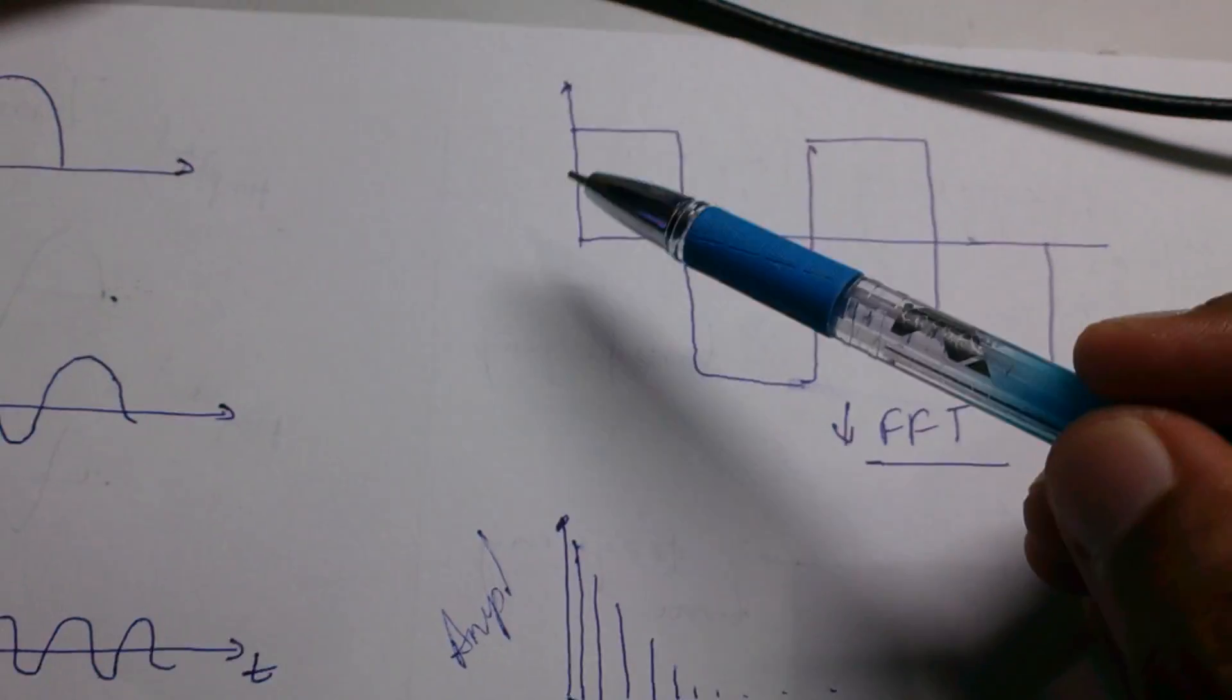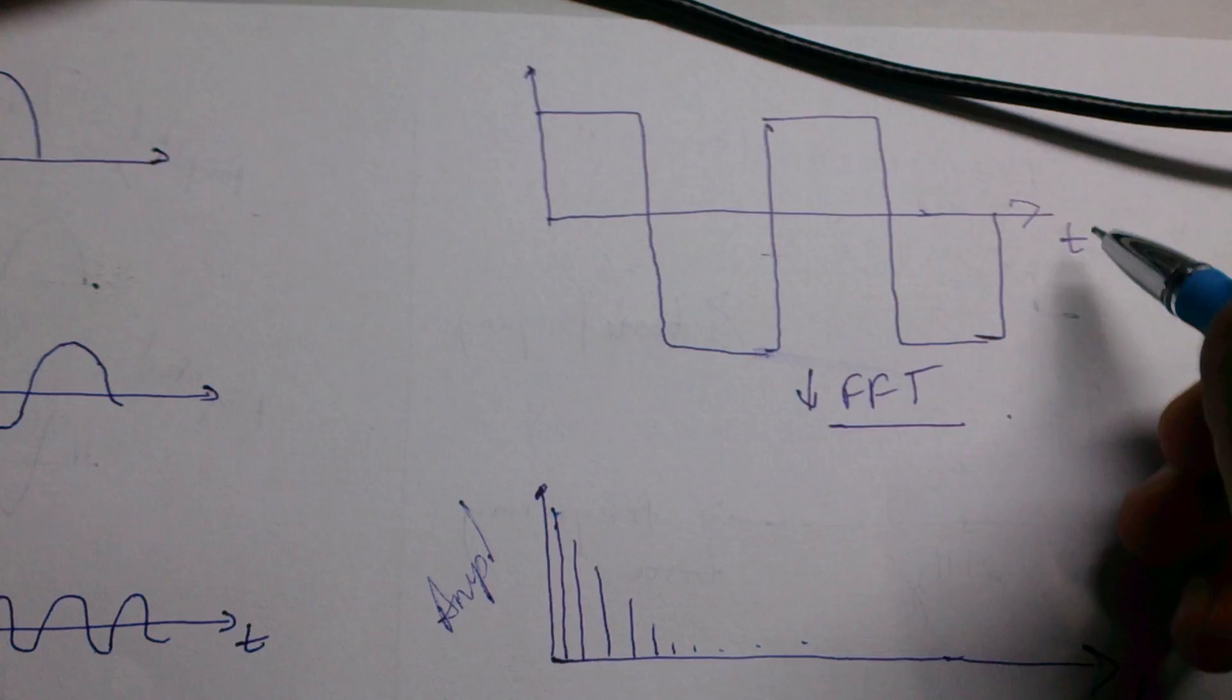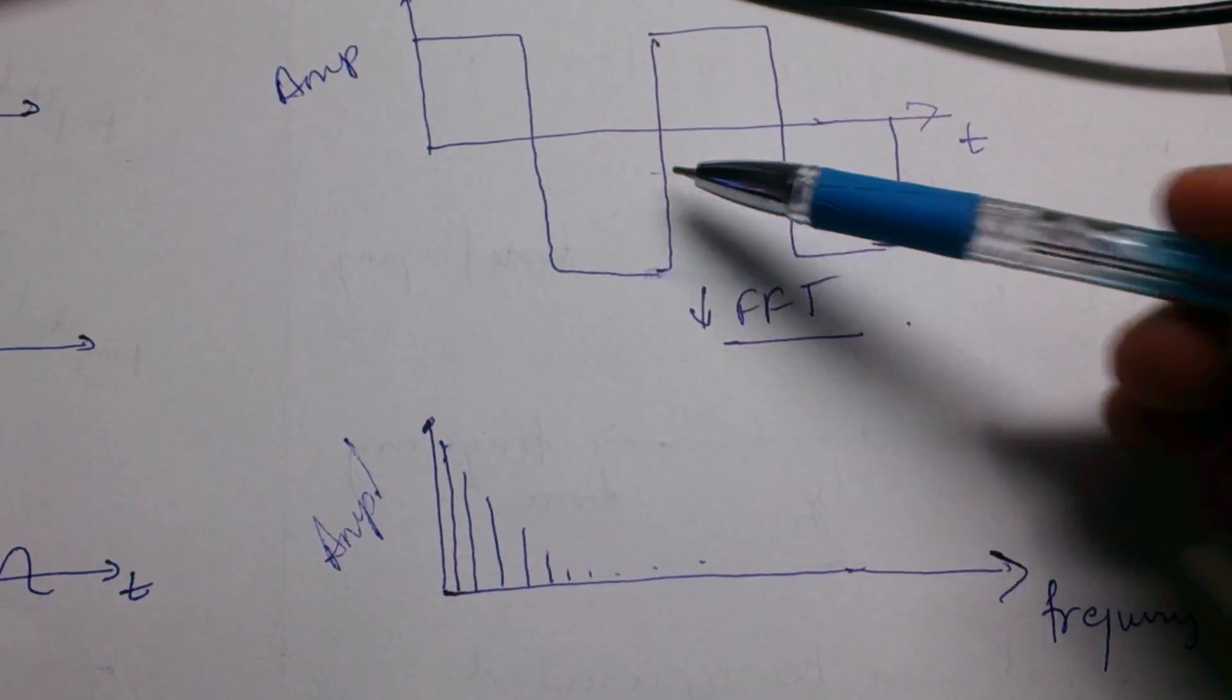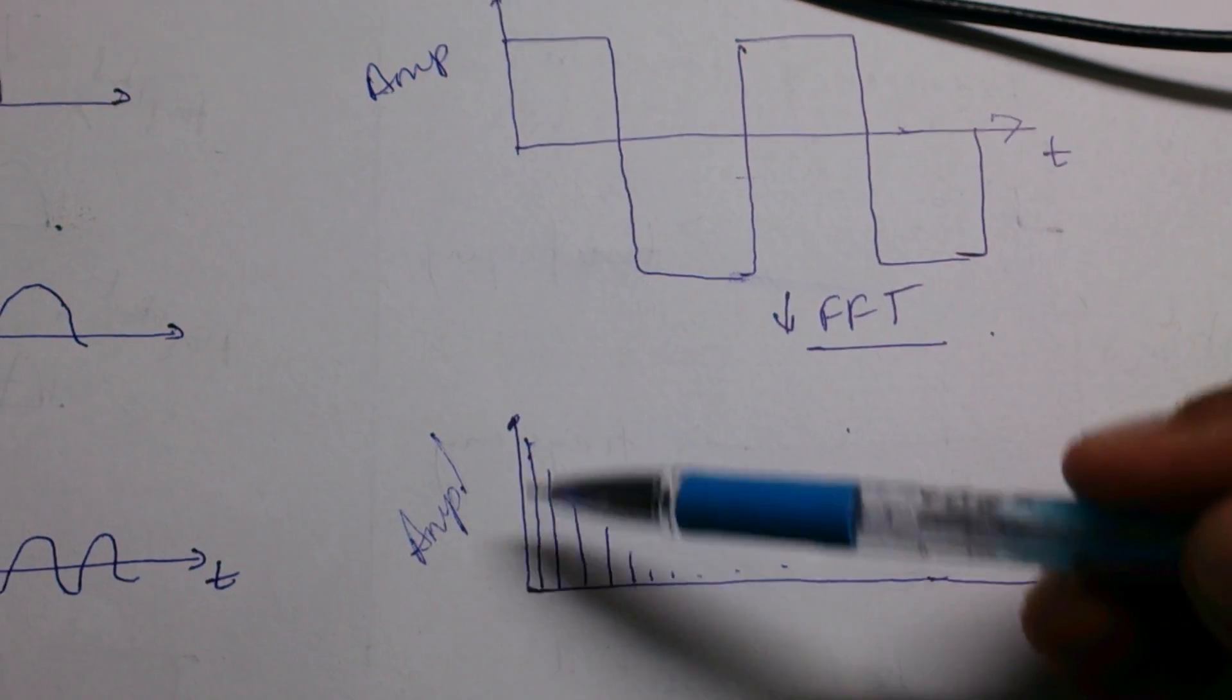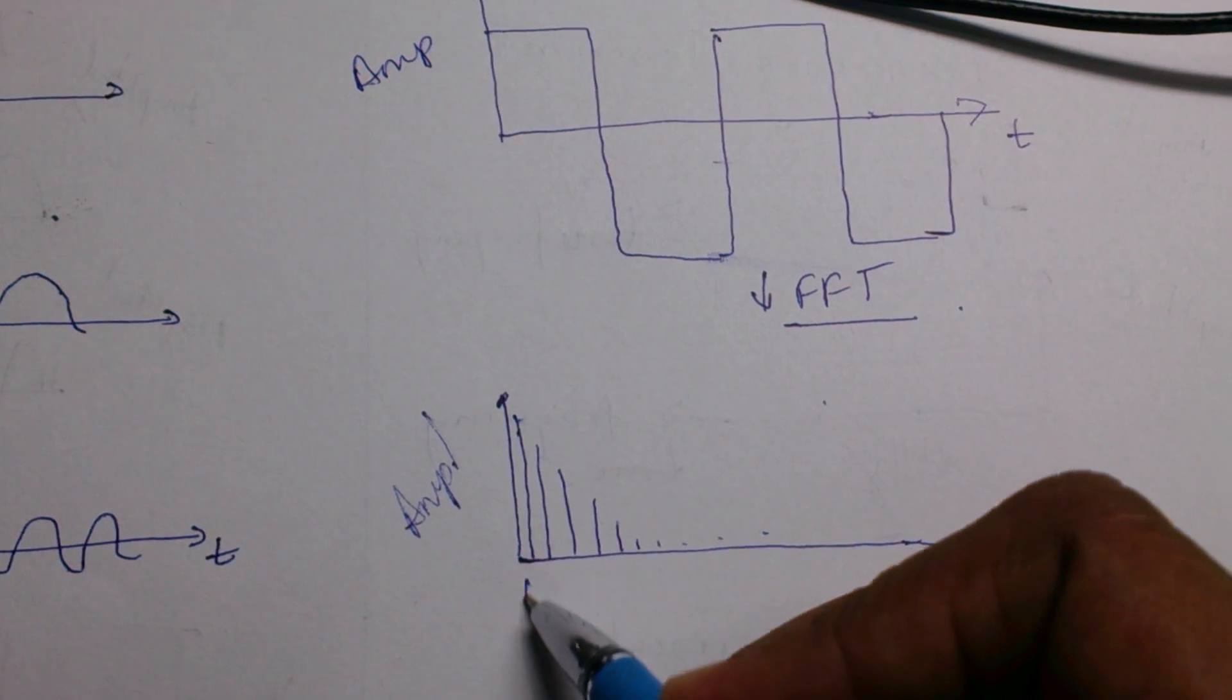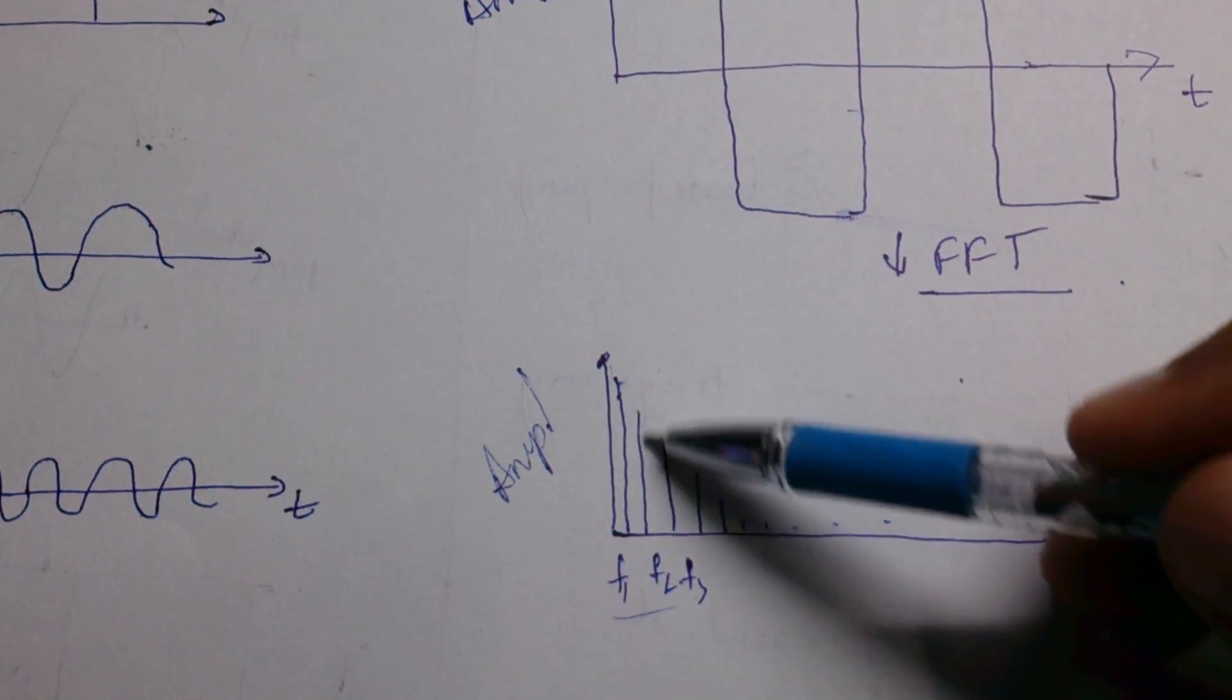Now if this is the signal in time domain, this is T, this is amplitude. If I take the Fourier transform of it, there's an algorithm by name Fast Fourier Transform. If you use that algorithm you will see something like this. There are different frequency components f1, f2, f3. These are the frequencies of these sinusoidal signals which are being added, and these are their amplitudes.